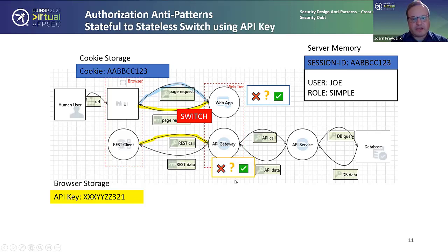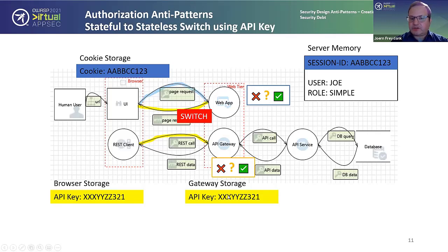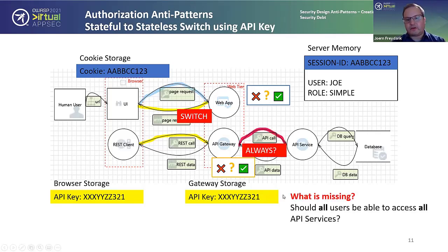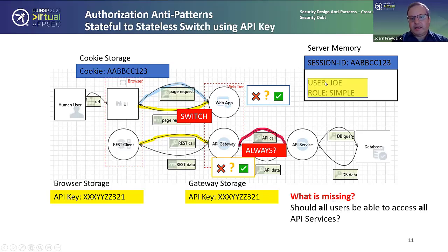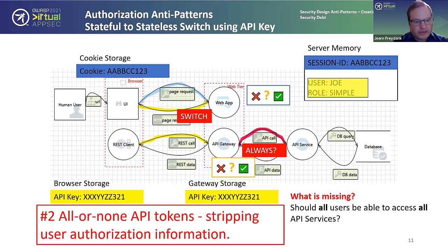The REST client sends that key over to the gateway, and the gateway does another go/no-go check — it checks storage and confirms it knows the key. Now the gateway wants to send a request to the next service, and here we run into an issue. What's missing is the answer to: should all users be able to access all API resources? Certainly not. What's missing is the user authorization information we had before in the session memory space. The first technical anti-pattern is using an all-or-none API token, which strips out user authorization information.